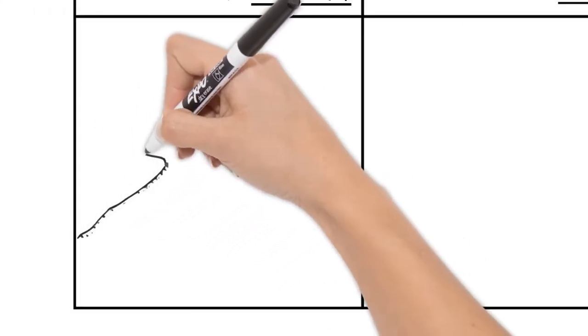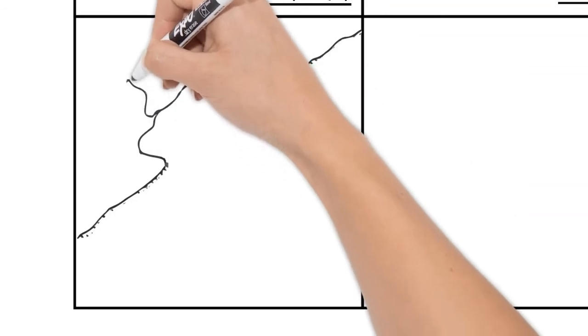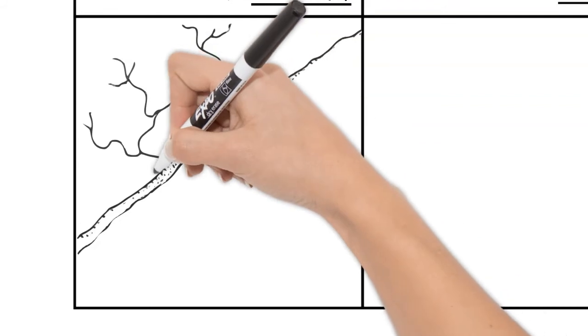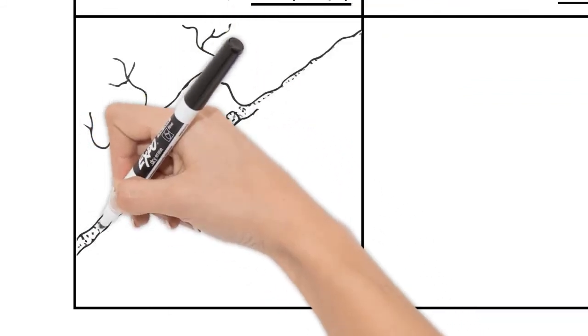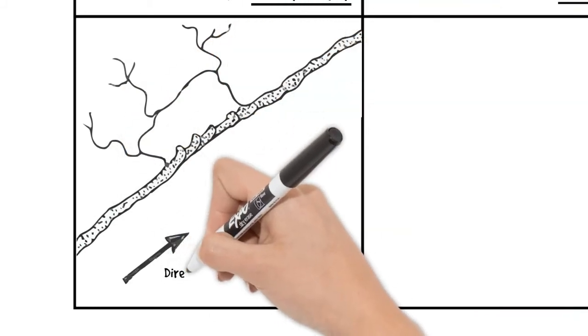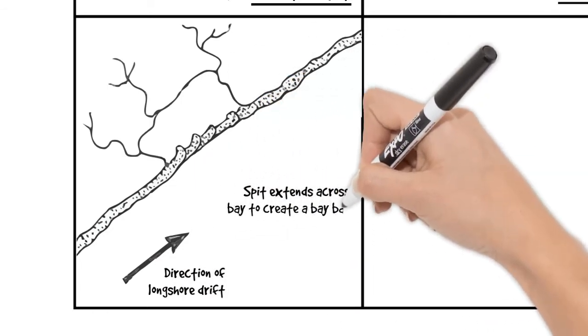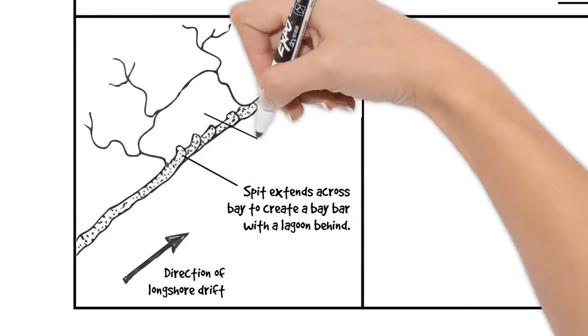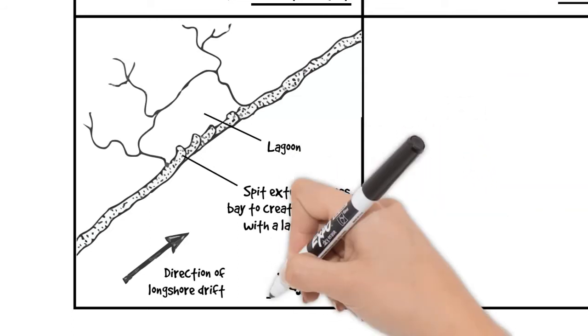Third diagram we're going to look at is a Bay bar. Here is a small bay, maybe some small rivers, not big enough to wash sediment away. And the longshore drift carries sediment across the entrance of the bay, leaving a bay bar. Behind there is a lagoon, a sheltered piece of water. Give it a title, underline it.